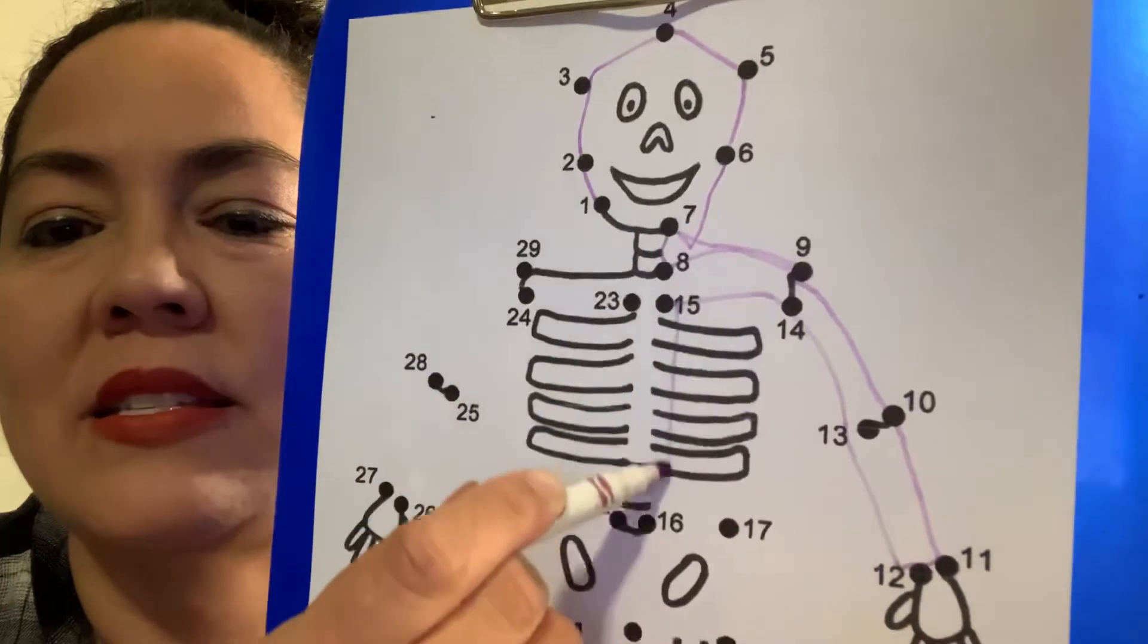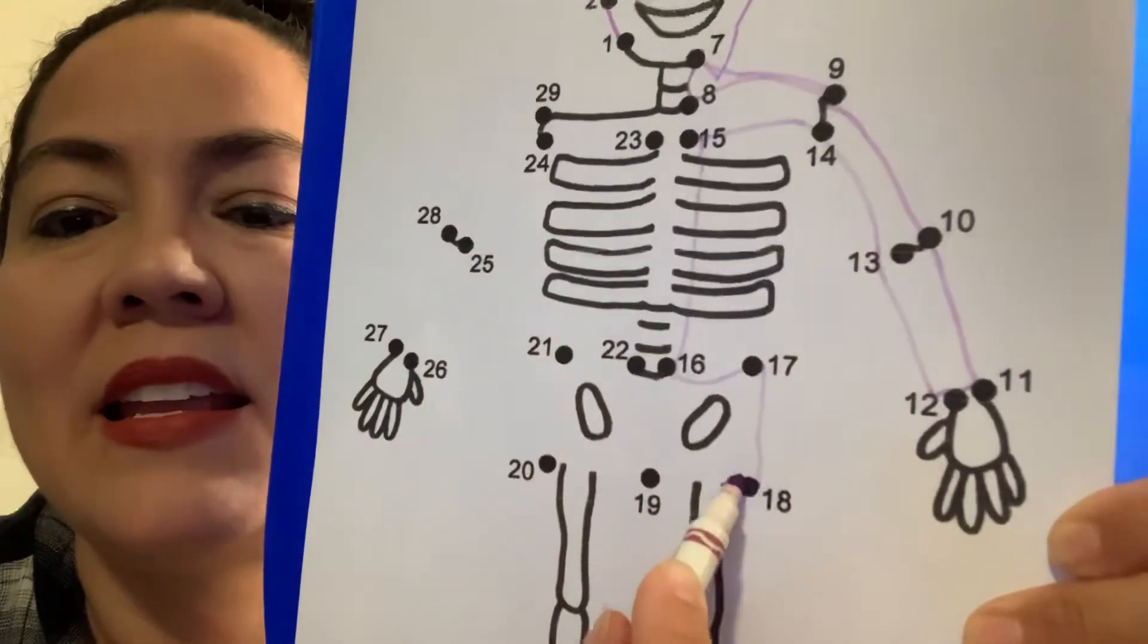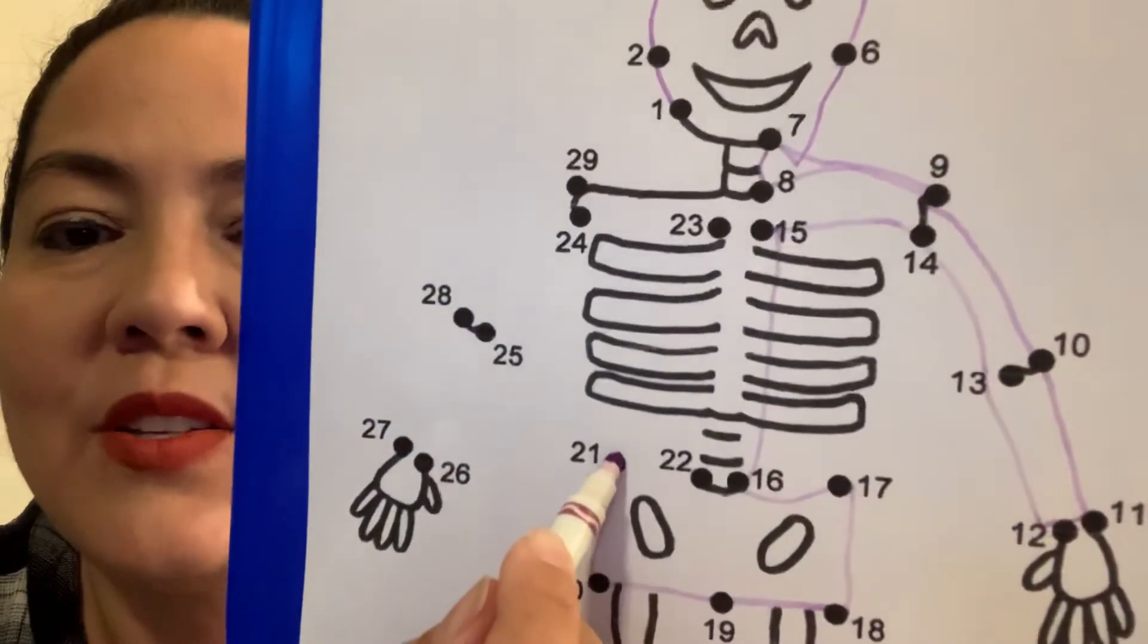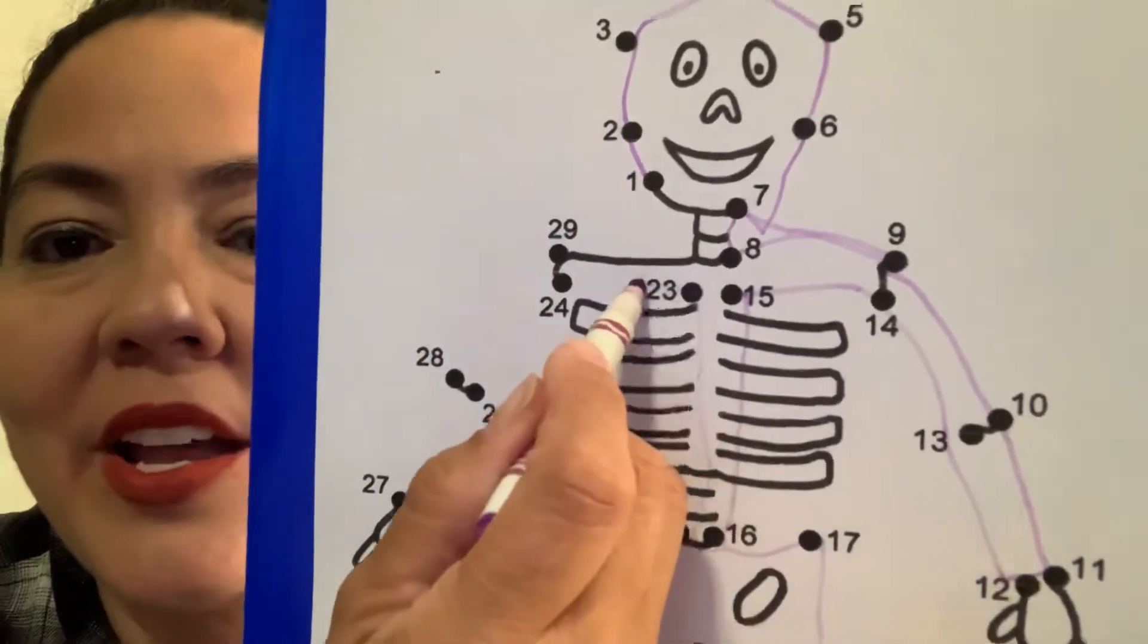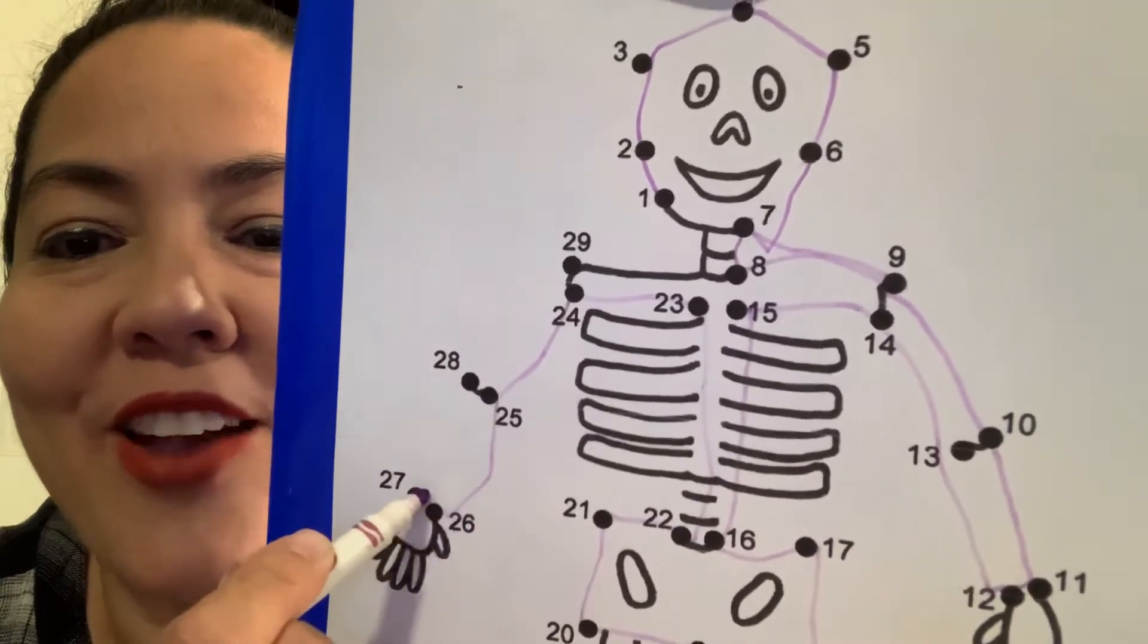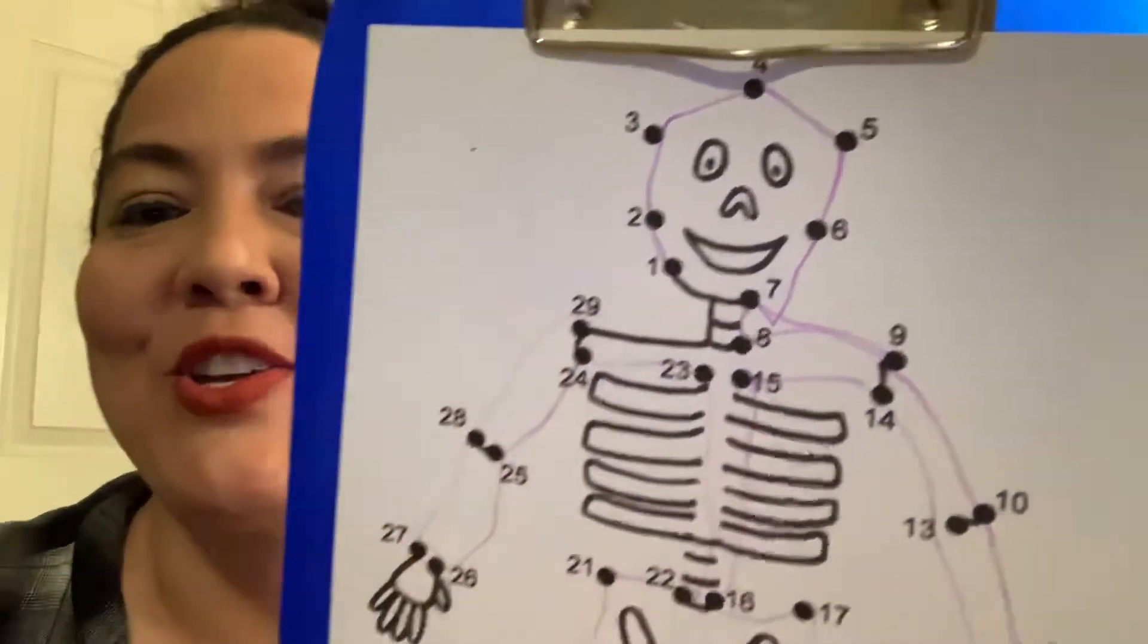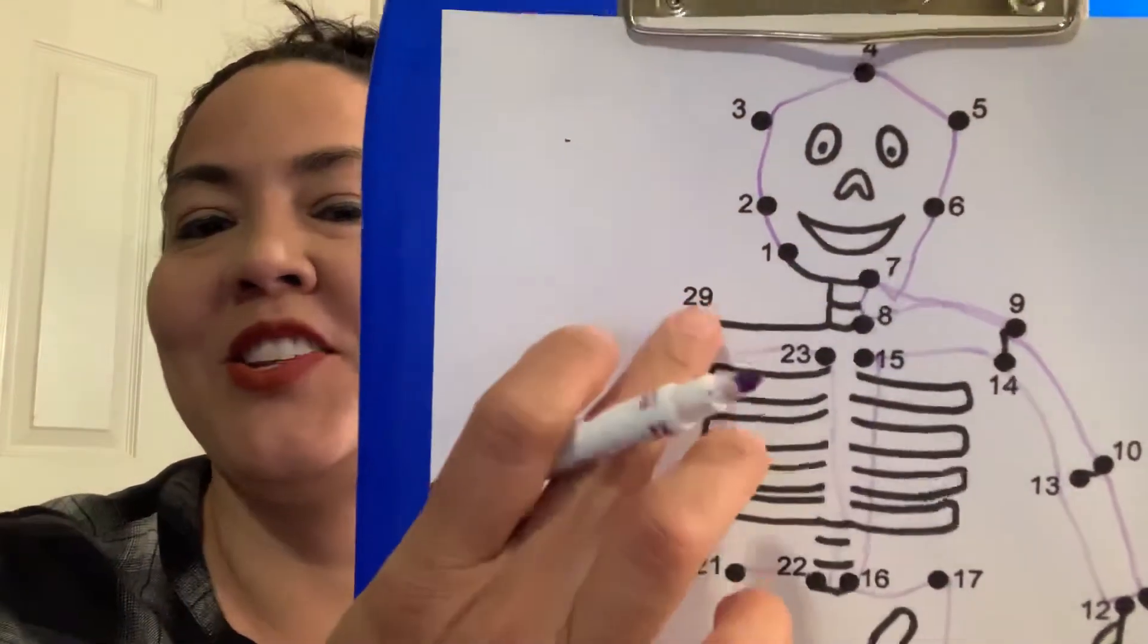We go down to 16, 17, 18, 19. Where's 20? Over here. One more. 20, 21, 22, 23, 24, 25, 26, 27, 28, 29. Who knows what's after 29? 30. There's no number 30. You just have to go to 29. And look, we made an X-ray man.